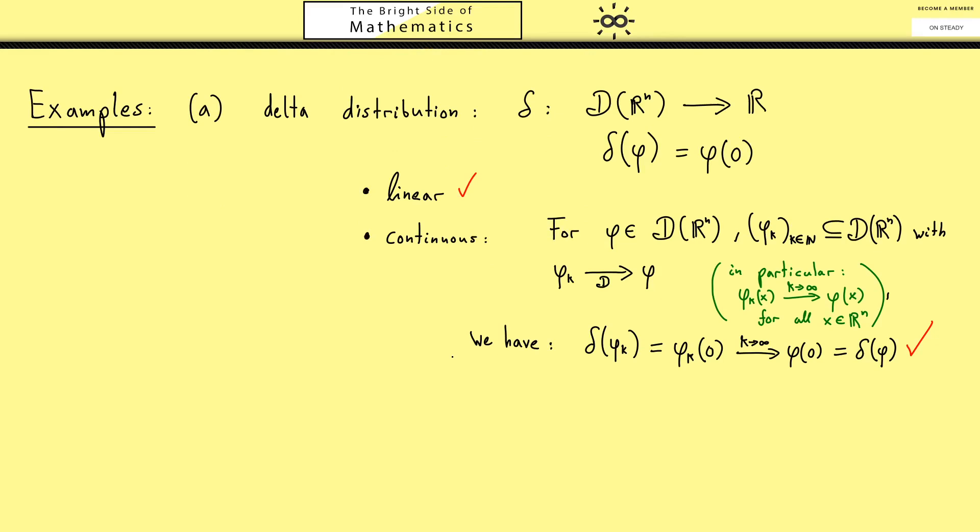What we also had from the beginning were some normal functions which could describe some mass densities. And of course we don't want to lose them in our distribution theory.